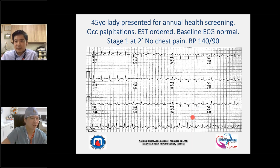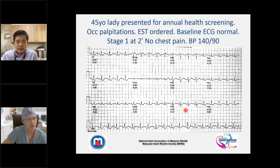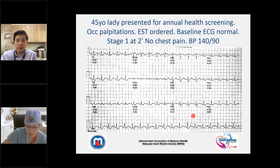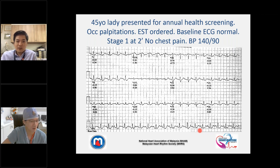First case: a 45-year-old lady came in for annual health screening. She mentioned occasional palpitations, but they were not frequent. A stress test was ordered. Baseline ECG was normal. At stage one, two minutes, she reported no chest pain and blood pressure was 140 over 90. At this stage, no one would want to stop the stress test — it's too early. We need to stress the patient enough to get the findings we're looking for.